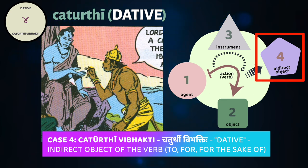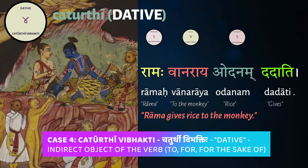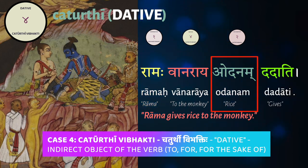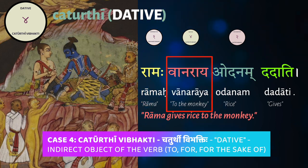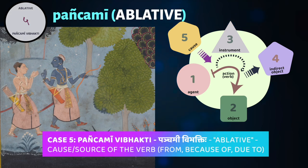The fourth case is the 'chaturthi vibhakti,' the dative, used to indicate the indirect object — the noun to which, for which, or for the sake of which any action is done. For example, 'ramaha vanaraya odanam dadati' means 'Rama gives the rice to the monkey.' Here 'dadati' is the verb, 'odanam' is the direct object in the accusative, 'ramaha' is in the nominative, and 'vanaraya' (to the monkey) is in the dative, the chaturthi vibhakti.